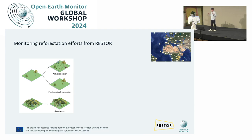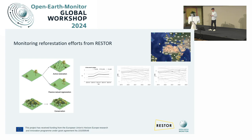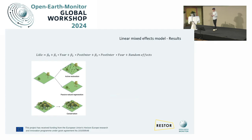Now let's look at all the different Restore sites on the platform — you can group them into different categories. These are only reforestation projects. We have conservation projects where the forest is already there, and for degraded land types, passive natural regeneration and active restoration. When you plot many sites together, it's hard to see visually what's going on, and you have different intervention years per site. To get an overall trend across all these sites, you can use linear mixed effects models — and this is what we did.